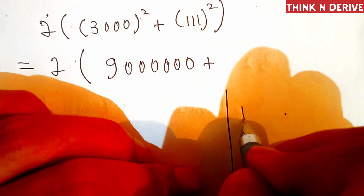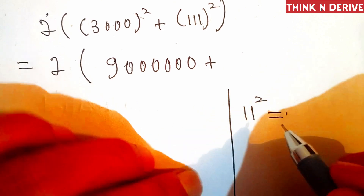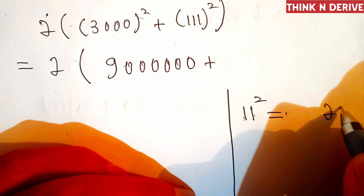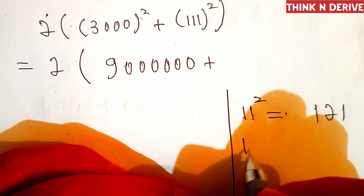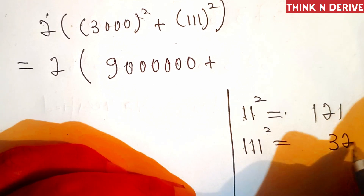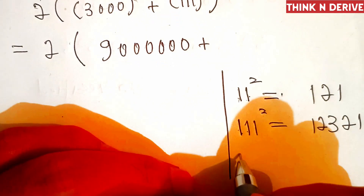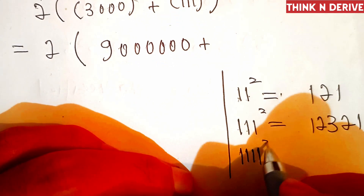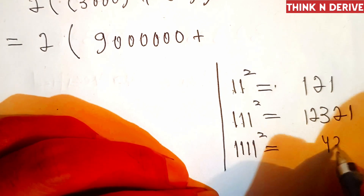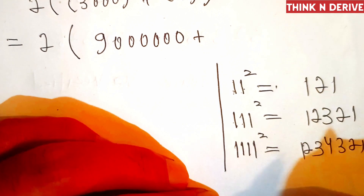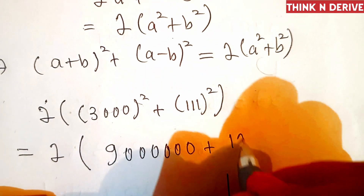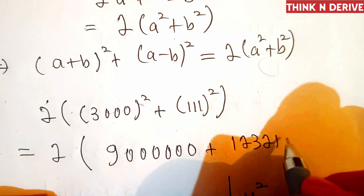Now we'll use a trick to compute 111². For example, 11² = 121 — add the digits (1+1=2) and write 1, 2, 1. Similarly, 111² = 12321 — the digit sum is 3, giving 1, 2, 3, 2, 1. And 1111² = 1,234,321. So 111² = 12321.